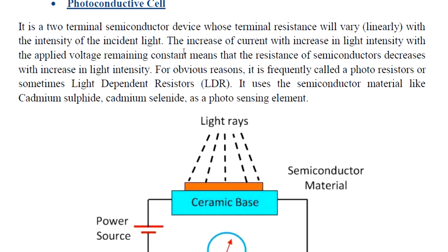The photoconductive cell is a two-terminal semiconductor device whose resistance varies linearly with the intensity of the incident light. As light intensity increases with applied voltage remaining constant, the resistance of the semiconductor decreases. This device is also known as the light-dependent resistor (LDR), and it is a variation of the photoconductive cell.